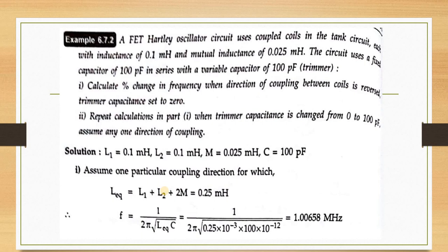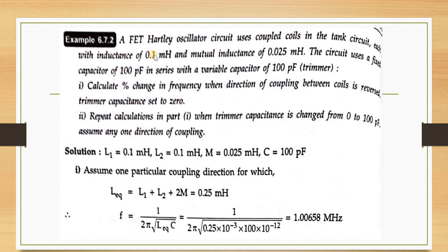Next problem: A FET Hartley oscillator uses coupled coils in the tank circuit, each with inductance L1 = L2 = 0.1 mH and mutual inductance M = 0.025 mH. The circuit uses a fixed capacitor of 100 pF in series with a variable trimmer capacitor of 100 pF. Calculate the percentage change in frequency when the coupling direction is reversed, with the trimmer capacitance set to 0.